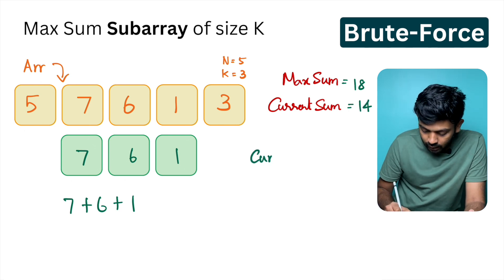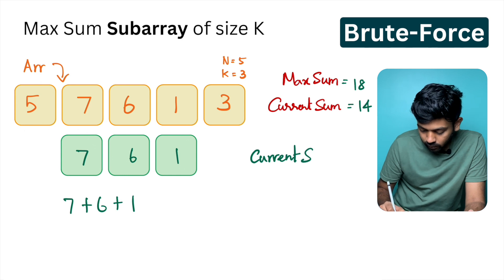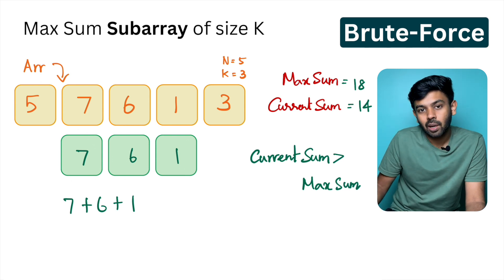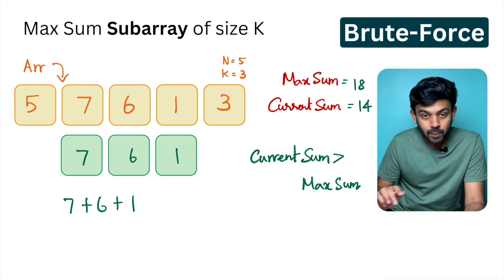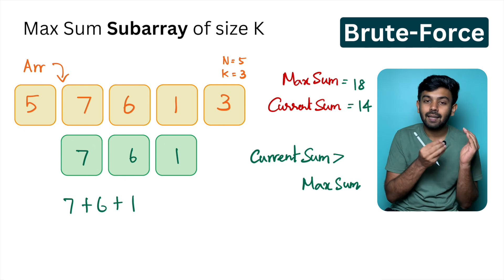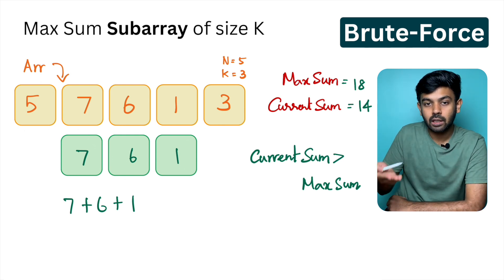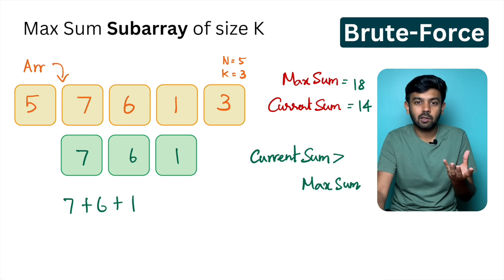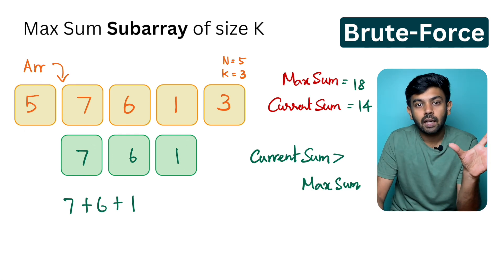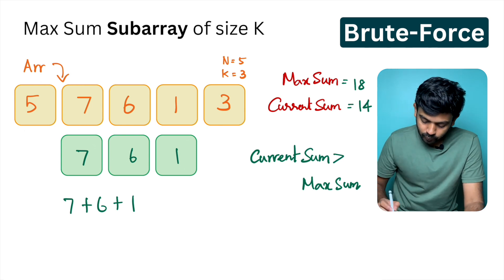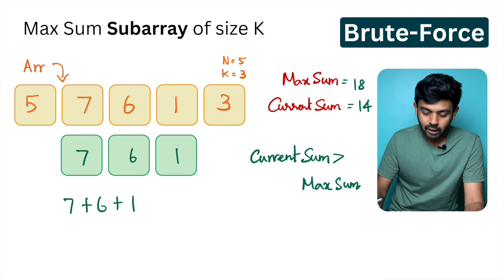Is current sum greater than max sum? Current sum is 14, max sum is 18 — no. So we do not update max sum. This is a simple concept, similar to finding the largest element in an array. Since current sum is not greater, we will not update.